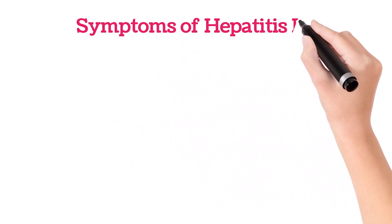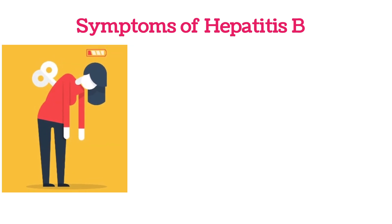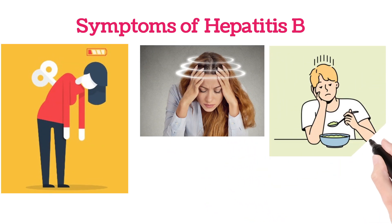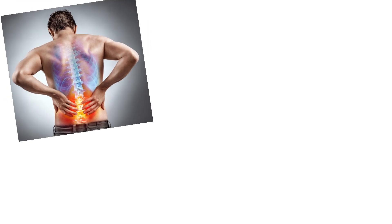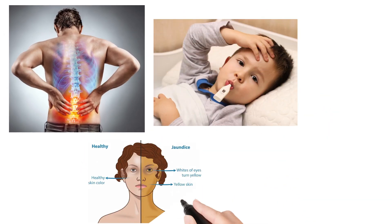Coming to the symptoms, people with Hepatitis B have symptoms of extreme tiredness, nausea, loss of appetite, muscle ache, fever, yellowing or discoloration of the skin, and dark color urine.